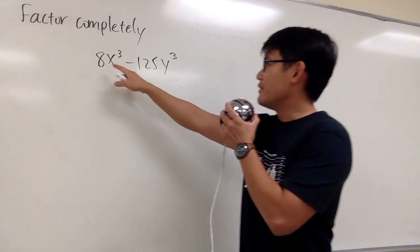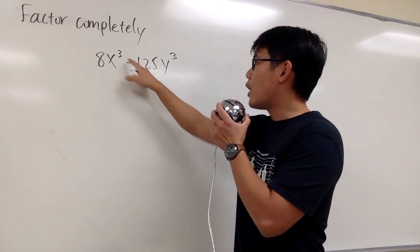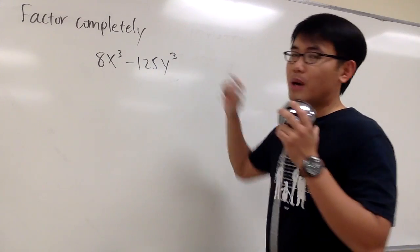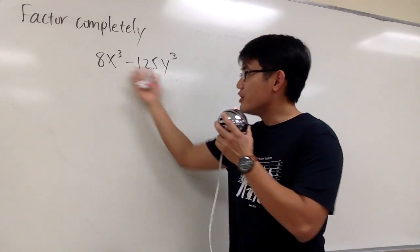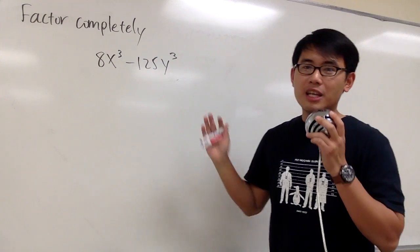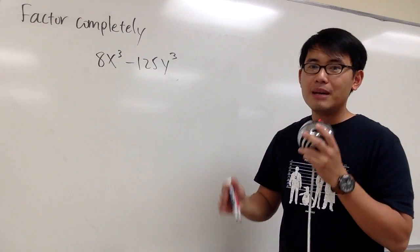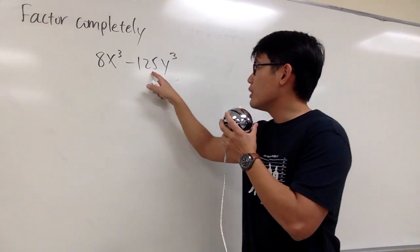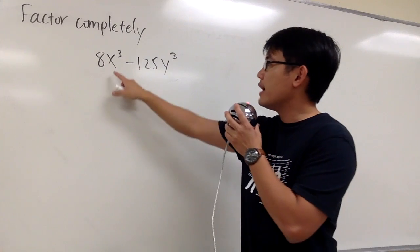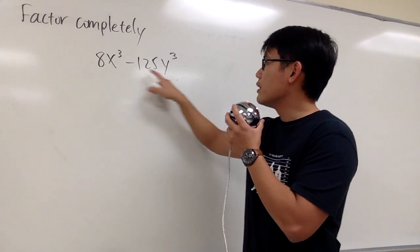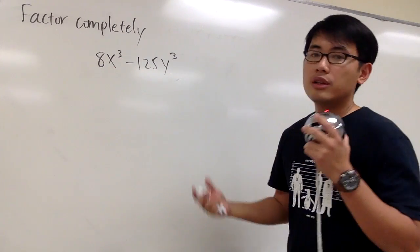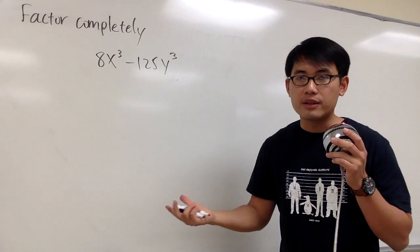We'll factor this out. We have 8x to the third power minus 125y to the third power. As usual, we should still check to see if we can factor out any common factor. But in this case, 8 and 125, we cannot. Likewise, this is just x to the third power and this is y to the third power, so we cannot factor out anything.